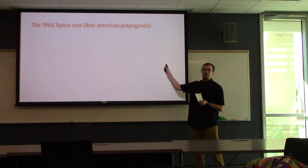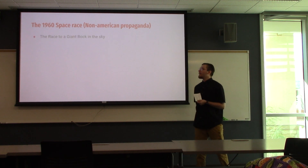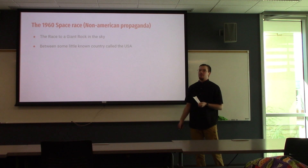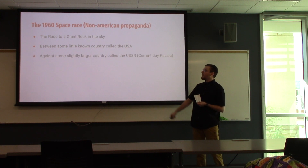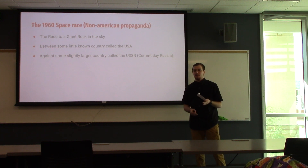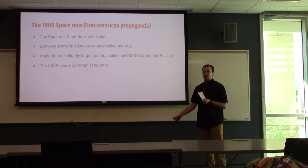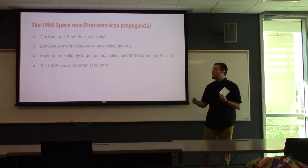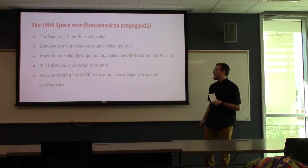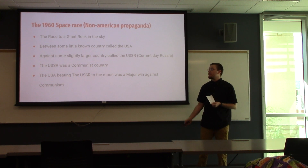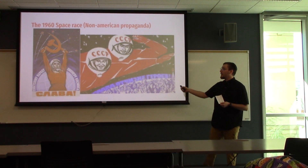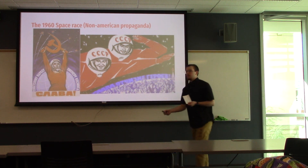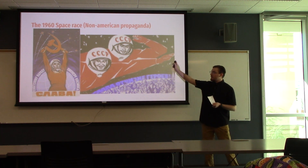The 1960s space race — non-American propaganda. The race to a giant rock in the sky, the moon, between some little-known country called the USA against some slightly larger country called the USSR, which is current-day Russia. The USSR was a communist country, which ticked the US off — we had to beat them. The US did beat the USSR to the moon, which was a major win against communism. Here's actual Russian propaganda from the USSR — this says 'Slava,' meaning glory, and the C's stand for USSR.